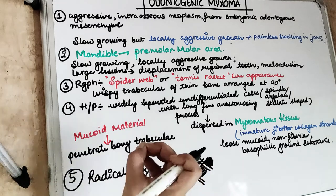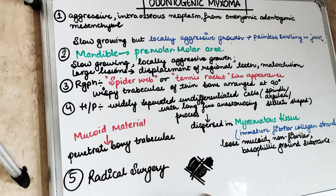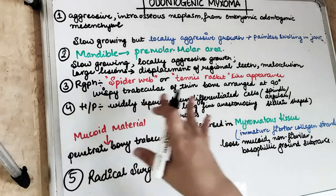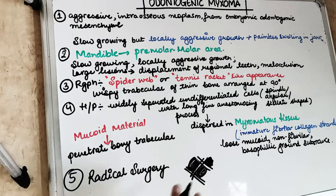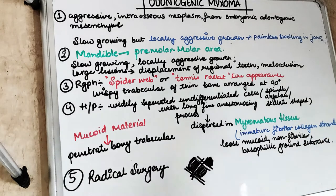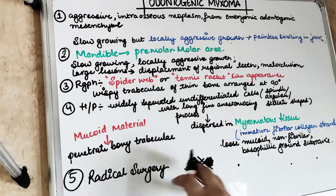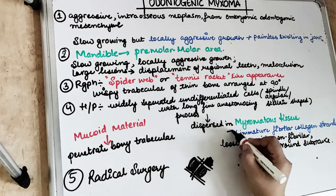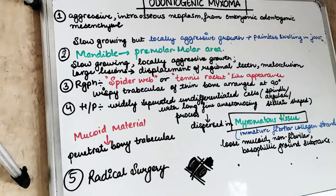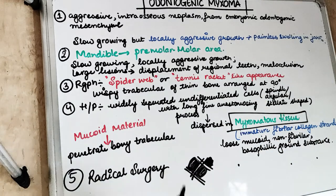This odontogenic myxoma radiographically shows the tennis racket or spider web appearance because of extremely delicate septa of residual bone, often seen perpendicular to each other. Histologically, there are undifferentiated cells that are spindle, angular, or stellate in shape, dispersed in a loose mucoid, non-fibrillar, basophilic ground substance containing immature collagen fibrillar strands — this is called the myxomatous tissue, hence the name myxoma.